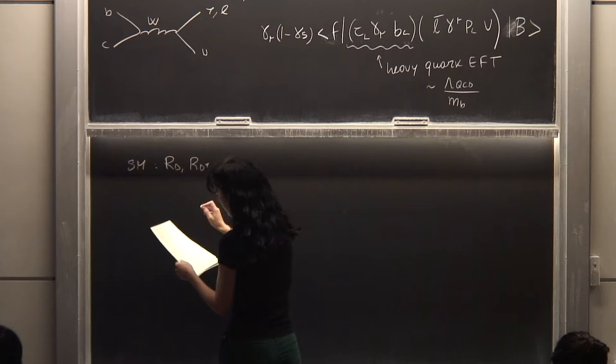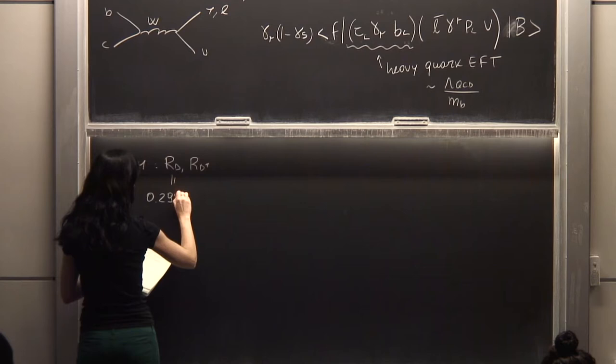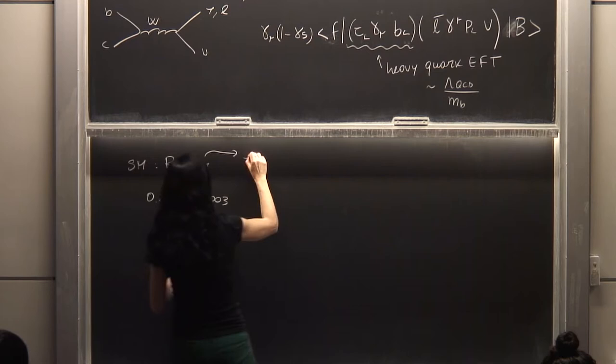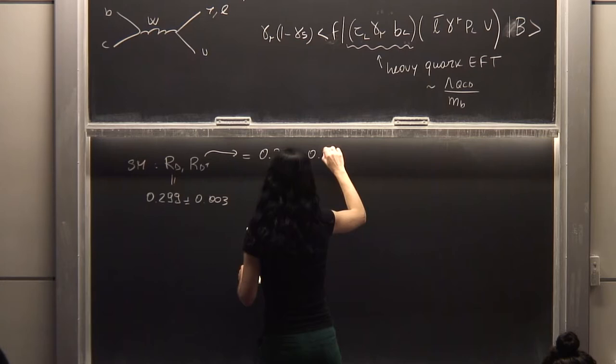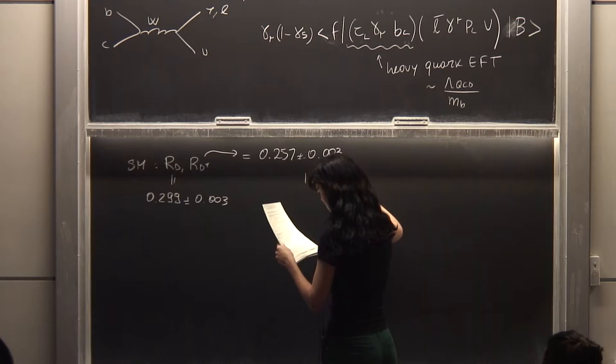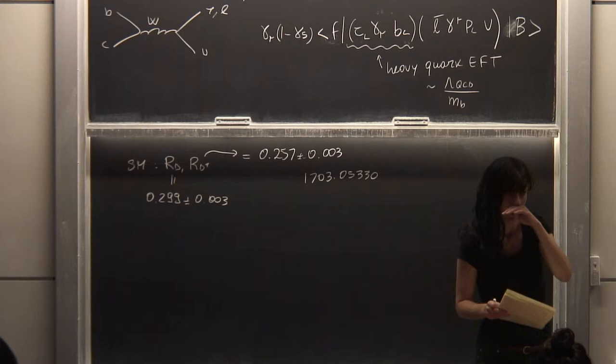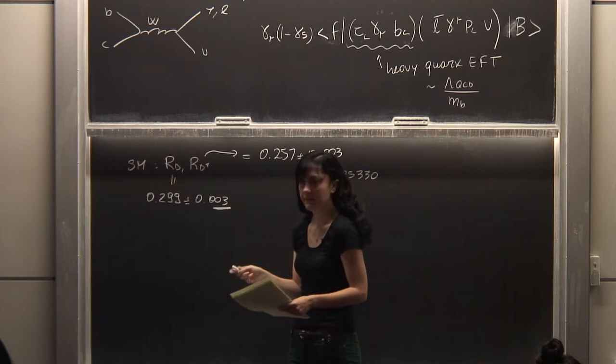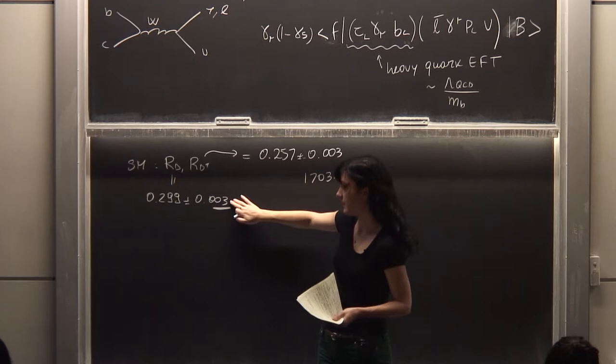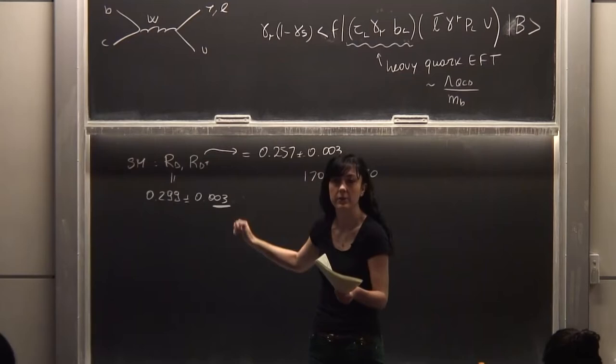The latest standard model computation gives RD = 0.299 ± 0.003, and RD* = 0.257 ± 0.005. I'm writing these numbers to show that we believe we know the standard model very well — the error is at the percent level. Using those numbers, you can compute the significance of this anomaly: RD alone is something like 2.3σ, and RD* is something like 3.4σ. Combining these measurements gives something close to 4σ — that's actually what you see here, the 4σ circle touching the standard model prediction.